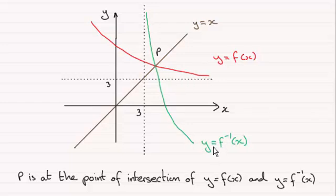The reason I know this is that in the previous part of the question we were asked to find the point P which was the intersection of the curve with y equals x. We solved the equation x equals f of x.